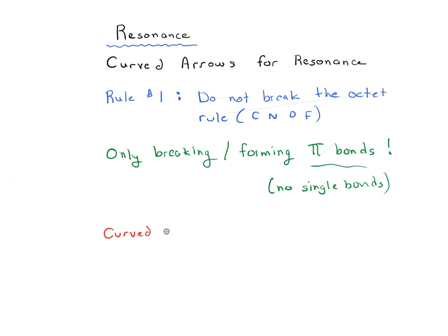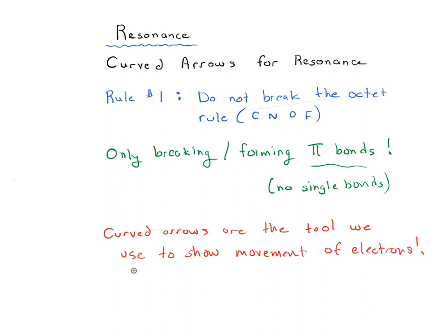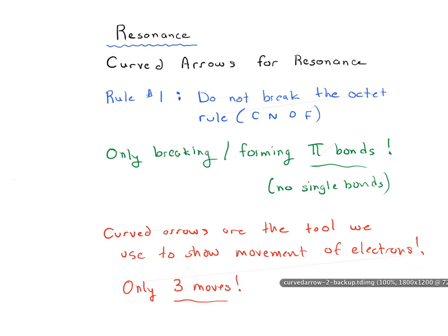Curved arrows are the tool we use to show the movement of electrons. The good news is there are really only three moves you can do with curved arrows. If you learn these three moves, you'll know how to move electrons around in resonance forms, which is a key skill in organic chemistry.